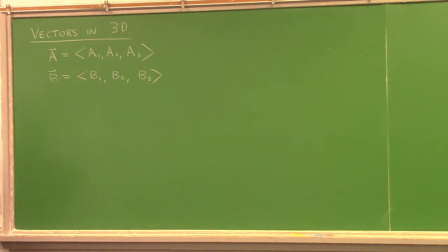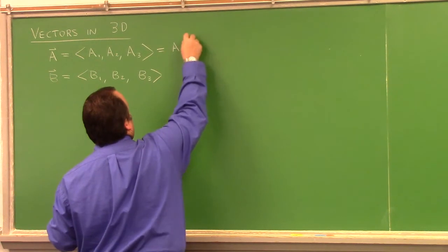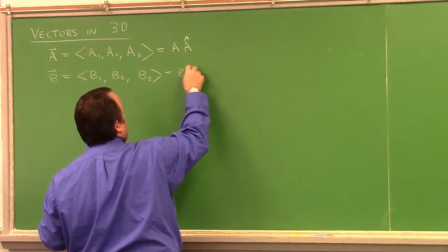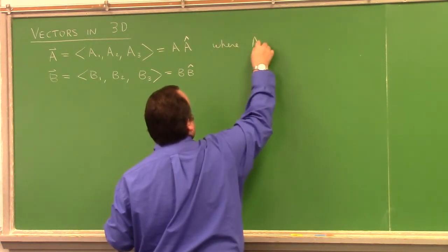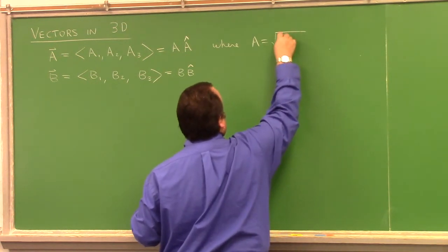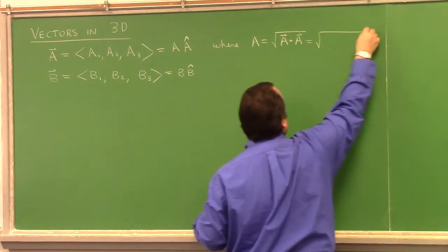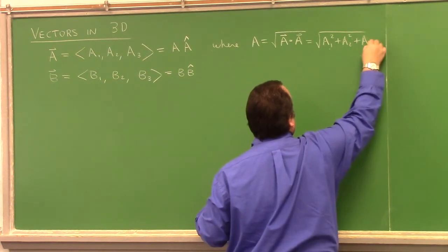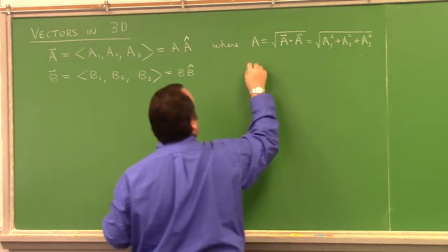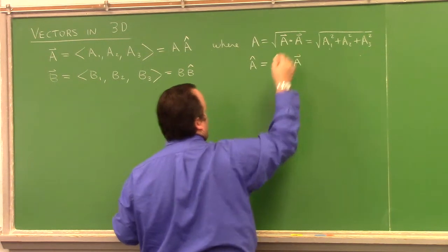We have two vectors in three dimensions, and we've talked about how to find their length. The length of A can be written as A-hat. A is the square root of the dot product of A with itself, which is just a formula for the square root of the sum of the squares of the components. The unit vector in the A direction is 1 over A times A.